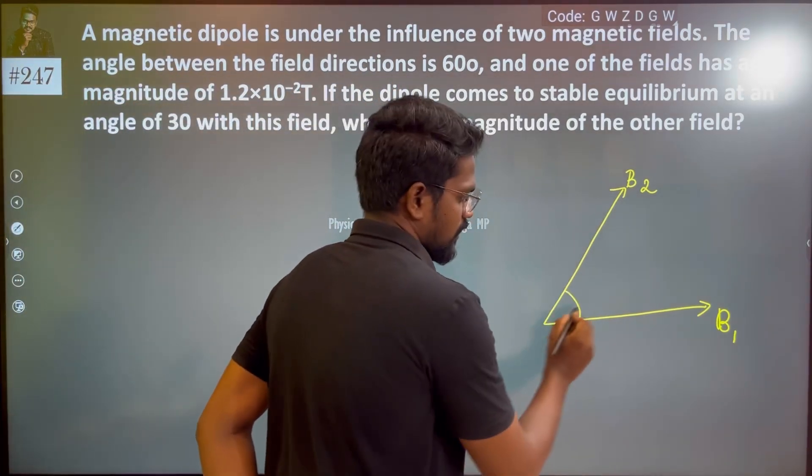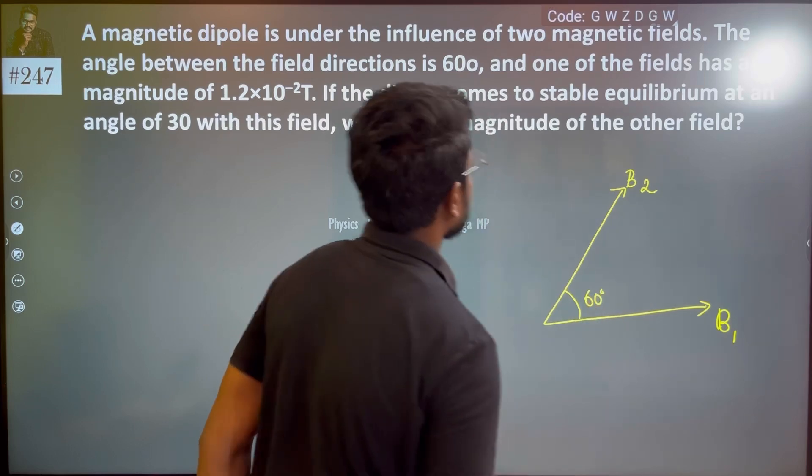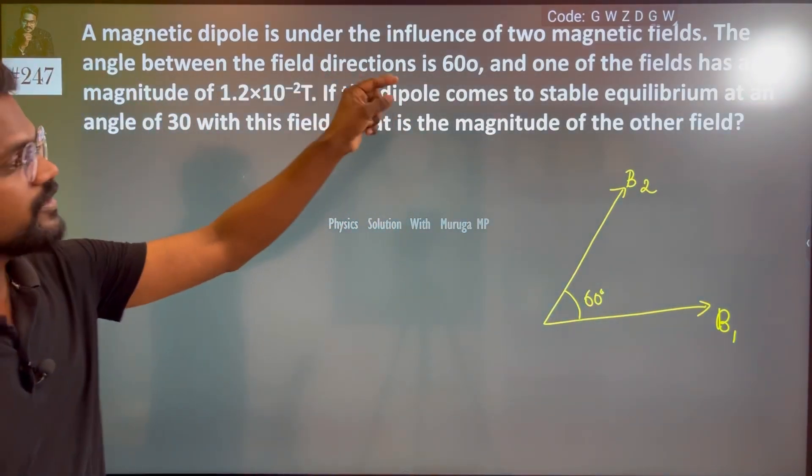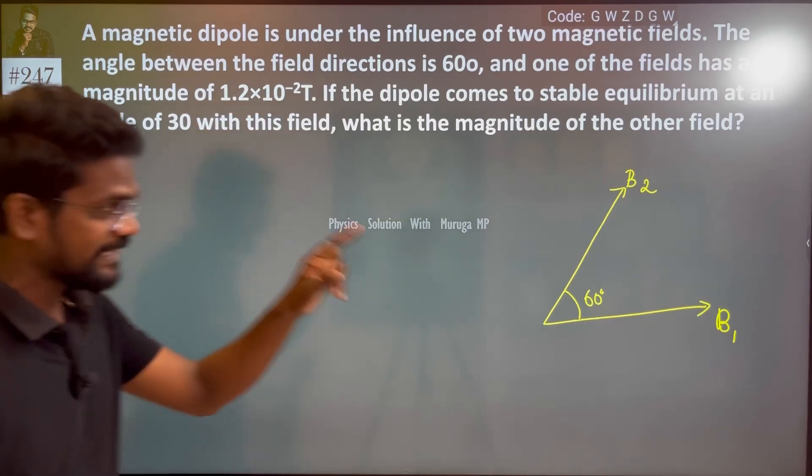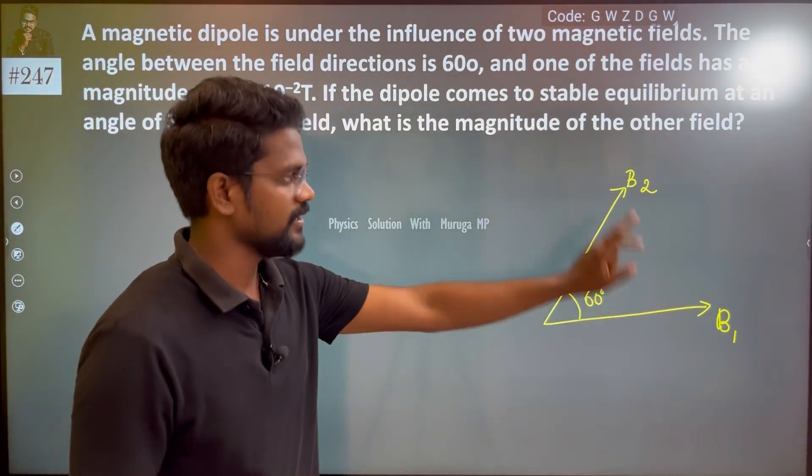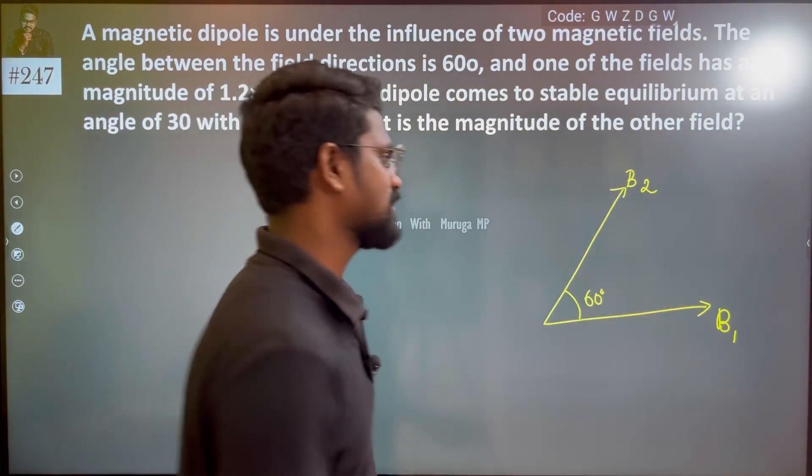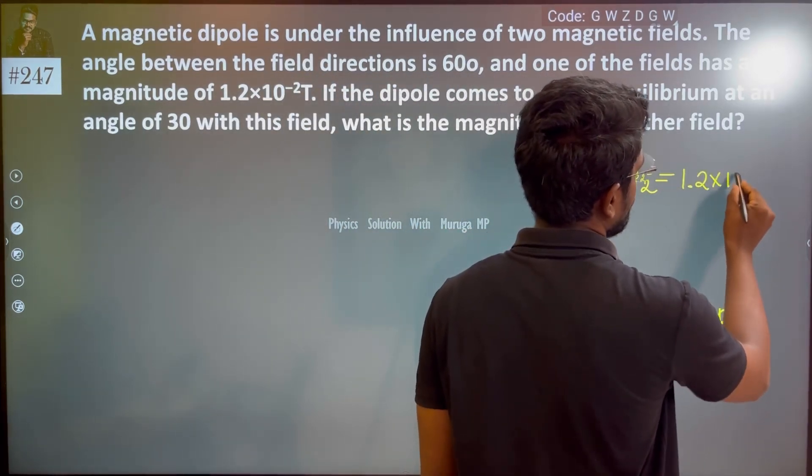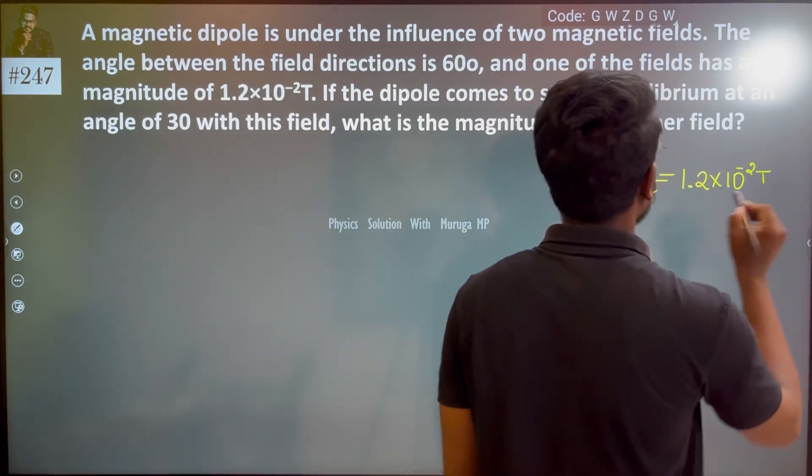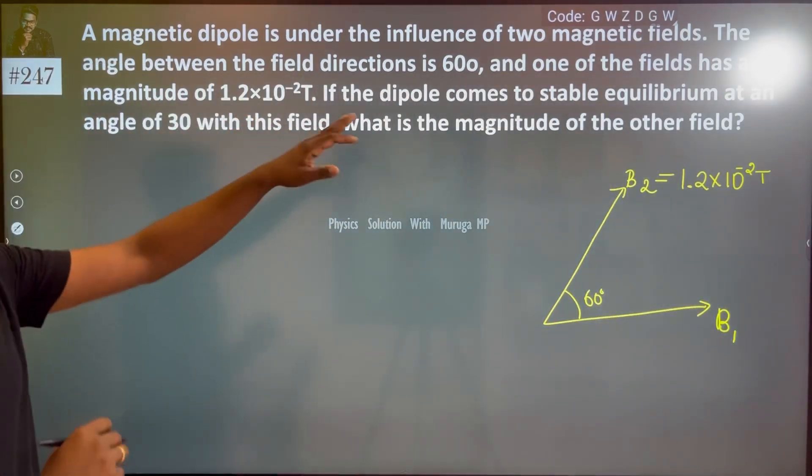The angle is 60 degrees and one of the fields has magnitude of 1.2×10^-2 Tesla. You can take either one. So let us say the B1 magnetic field is 1.2×10^-2 Tesla, and we have B2.